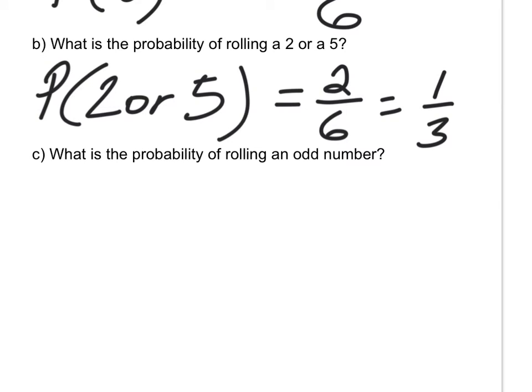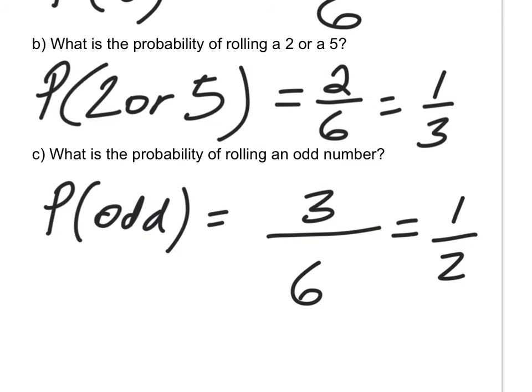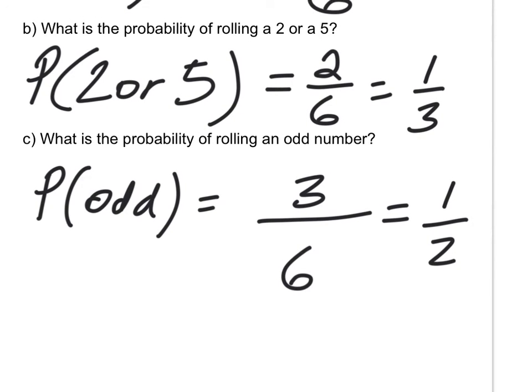What is the probability of rolling an odd number? Rolling a dice gives six possible outcomes. The odd numbers are one, three, and five — so three good outcomes — giving three over six, which reduces to one-half. Going back to our earlier rule: the probability of rolling each face is one-sixth, and if you add them all up you get one. All probabilities of possible outcomes sum to one.